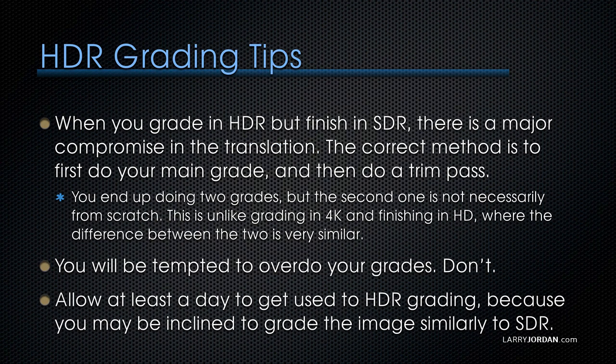When you grade HDR but finish in SDR, there is a major compromise between high dynamic range and standard dynamic range video. The correct method is: first do your main grade, then do a trim pass. Edit your project, reach picture lock, sound is done — the very last thing before final output is the color grade. If your main deliverable is SDR, do your color grade in SDR. If your main deliverable is HDR, do your color grade in HDR. Then duplicate the project, take that second project, set it to Rec. 709, and go back and trim your color grade.